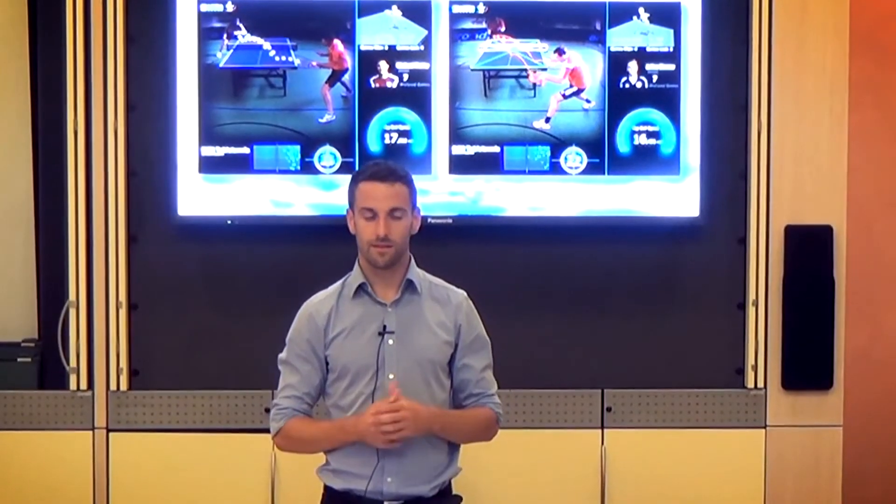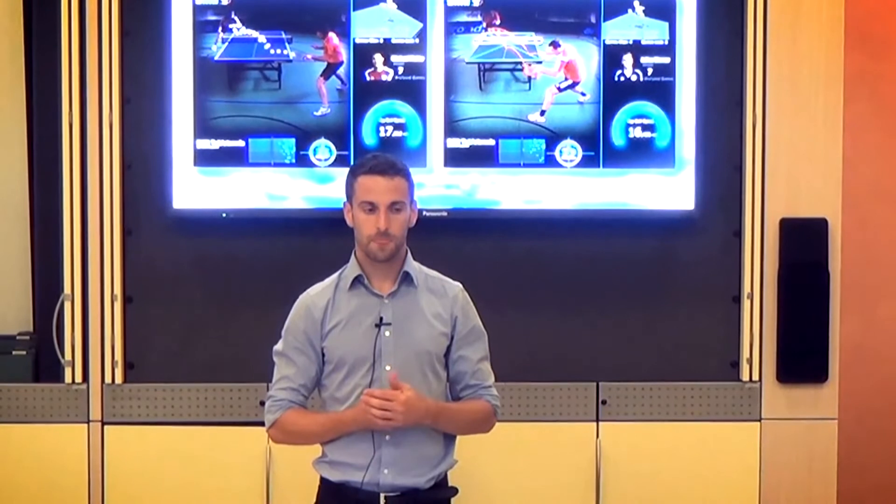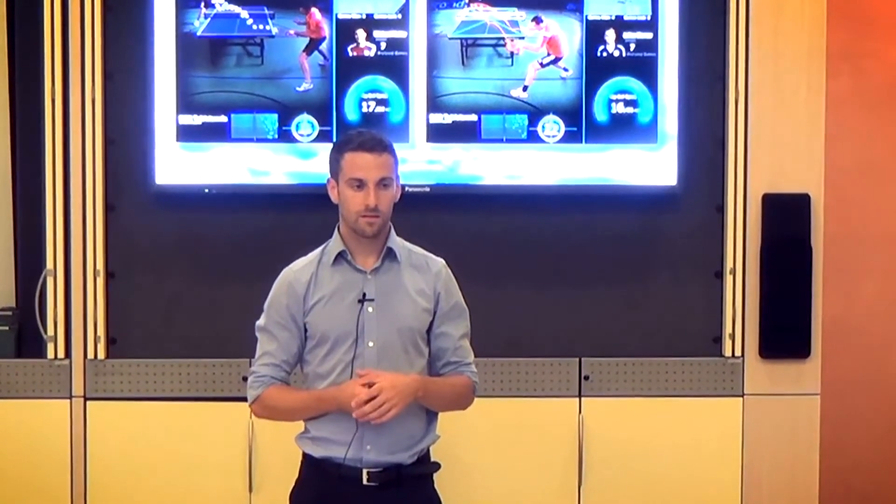Just a simple practical example. On a World Championship team match is played on one table, there's maybe five matches, two and a half hours. I film all these matches. And then the system can tell me player A played 50% of it is short to forward, receive was long to backhand, first topspin was backhand topspin. This is what you can do.